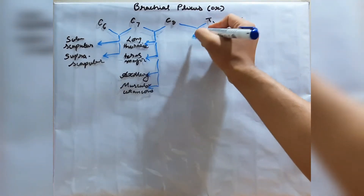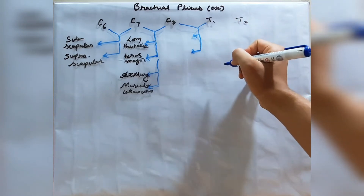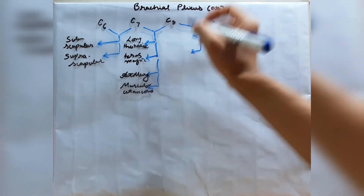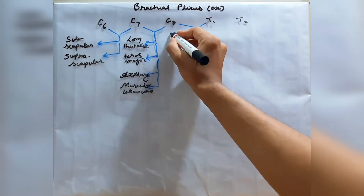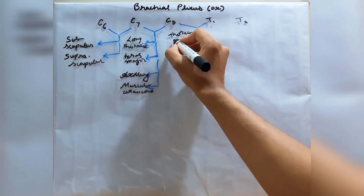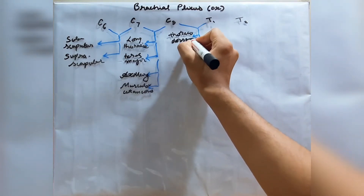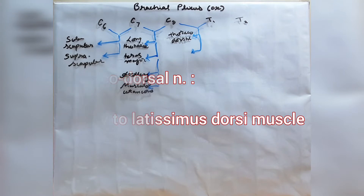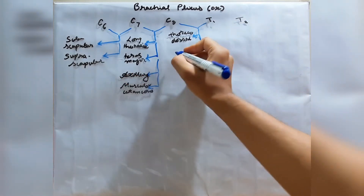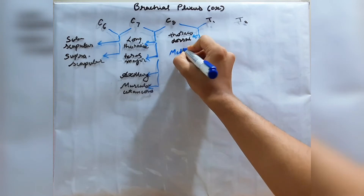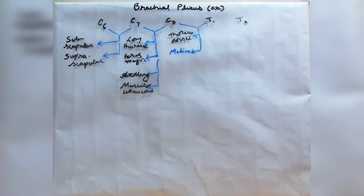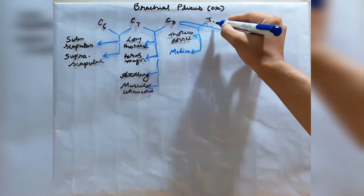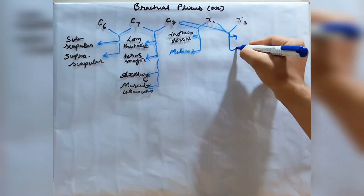Now let us come to C8 and T1. C8 and T1 provide innervation through two nerves. The first is the thoracodorsal nerve, which supplies the latissimus dorsi muscle. The second nerve from C8 and T1 is the median nerve, which I will talk about a little bit later.